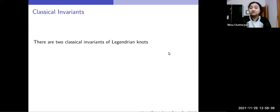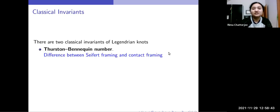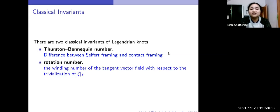There are two classical invariants of Legendrian knots. The first one is the Thurston-Bennequin number. The Thurston-Bennequin number measures the difference between Seifert framing and contact framing. And the second one is the rotation number, which is the winding number of the tangent vector field with respect to the trivialization of ξ.